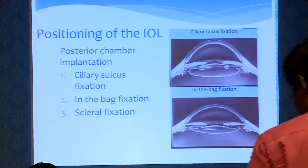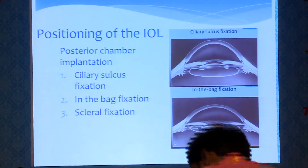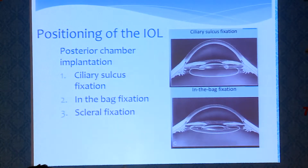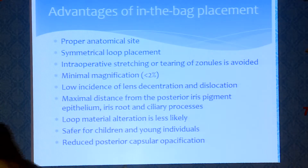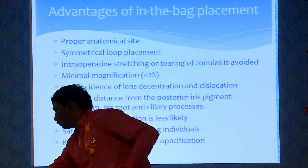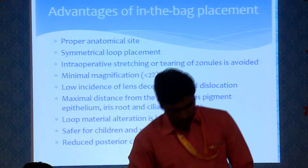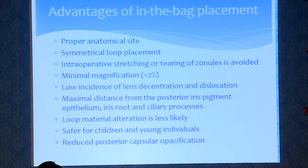The position of the IOL can be either in the ciliary sulcus or posterior chamber implantation, or scleral fixation. Bag fixation is most commonly done as it is the proper anatomical site. It provides symmetrical loop placement, avoids intraoperative stretching or tearing of the zonules, has minimal magnification, low incidence of lens decentration and dislocation, and is at maximal distance from the posterior iris pigment epithelium, iris root, and ciliary processes. Loop material alteration is less likely, it is safer for children and young individuals, and there is reduced PCO.